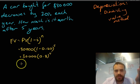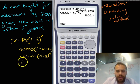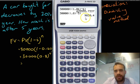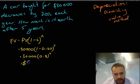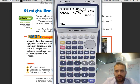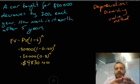You type that into your calculator, and you'll get some kind of answer. Well, and we get our answer here, $9,830.40. $9,830.40. Okay, so that's our diminishing value method of depreciation.